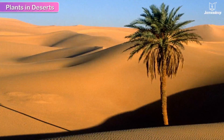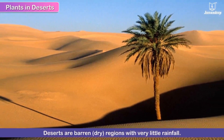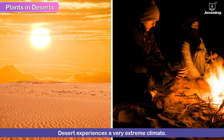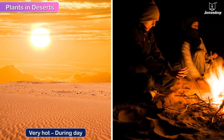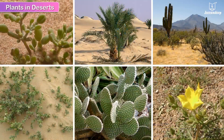Plants in deserts. Deserts are barren, i.e. dry regions with very little rainfall. As such, they experience a very extreme climate — very hot during the day and very cool at night. Because of the extreme weather and poor rainfall, there is not much vegetation. Very few plants grow in deserts. These plants adapt themselves to the desert climate.